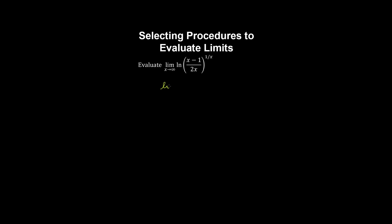Let's evaluate the following limit. We can apply the rules for logarithms to put the exponent outside the natural log, and apply the product rule for limits to split the limit into two. Doing a bit of algebra, inside the natural log we have 1 half minus 1 on 2x. By continuity of the natural log, we can take the limit inside the natural log, and recognise that as x goes to infinity this term goes to 0. Therefore this limit gives the natural log of 1 half. And on the left, as x goes to infinity this term goes to 0, so this limit evaluates to 0.